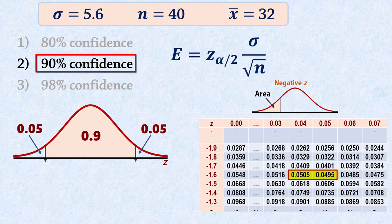That is between Z scores of negative 1.64 and negative 1.65. So we average the two values to obtain negative 1.645. And so the critical value is 1.645.